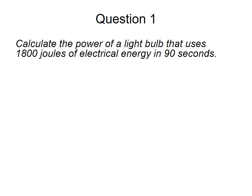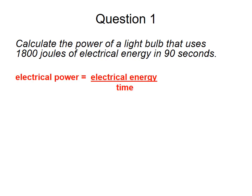Question 1: Calculate the power of a light bulb that uses 1800 joules of electrical energy in 90 seconds. Pause the video and try it. Electrical power equals electrical energy over time: 1800 divided by 90 equals 20 watts.